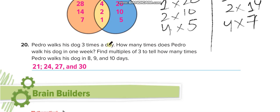Pedro walks his dog three times a day. How many times does Pedro walk his dog in one week? One week has 7 days, so 3×7=21 times. Then in 8 days: 3×8=24. In 9 days: 3×9=27. In 10 days: 3×10=30.